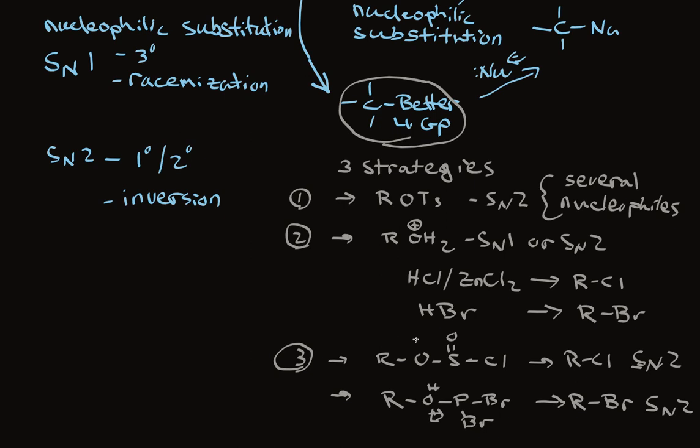So, in summary, these reagents convert alcohols to intermediates that are far more reactive toward nucleophilic substitution, because they have better leaving groups. And then, in a nucleophilic SN1 or SN2 reaction, that leaving group is replaced by a nucleophile to make a variety of products, depending on the nucleophile.